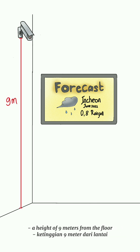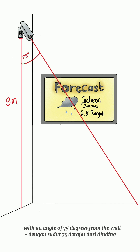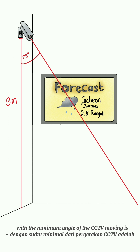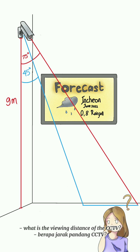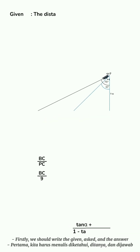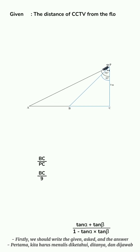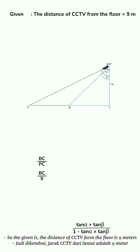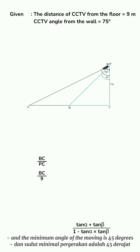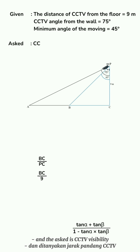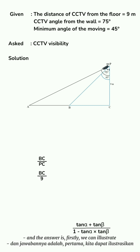The CCTV in Yuna's room is placed at a height of 9 meters from the floor, with an angle of 75 degrees from the wall. The minimum angle of the CCTV moving is 45 degrees from the wall. Yuna wants to know the viewing distance of the CCTV. To answer this, we first write the given information: distance of CCTV from the floor is 9 meters, CCTV angle from the wall is 75 degrees, and the minimum angle of movement is 45 degrees.